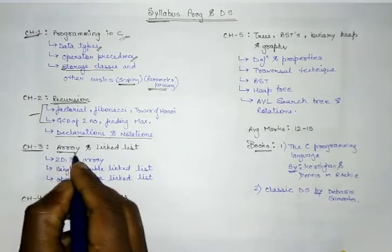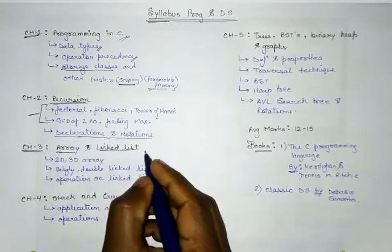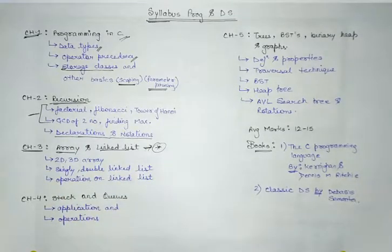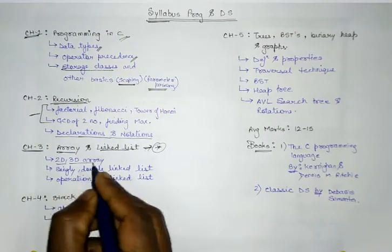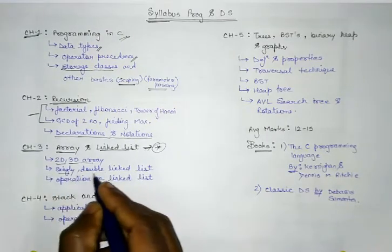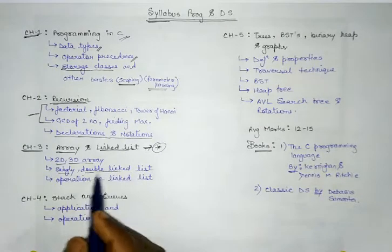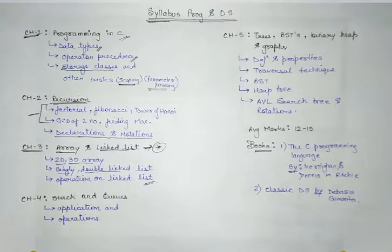Next thing is array and linked list. One of the important topics in data structure. Here we will be dealing with 2D array, 3D array, singly linked list, doubly linked list and what are the operations that we have to perform on the linked list. So the third chapter deals with this array, linked list and the operations on that.